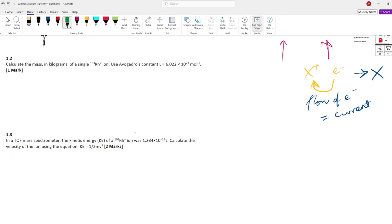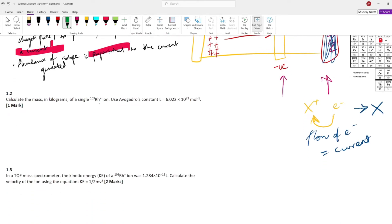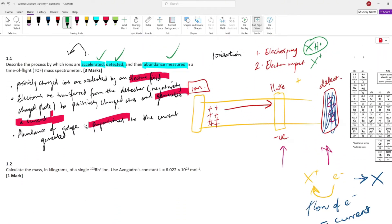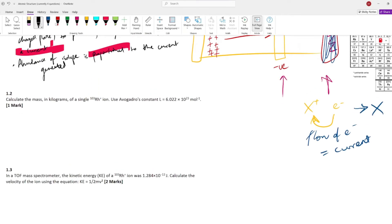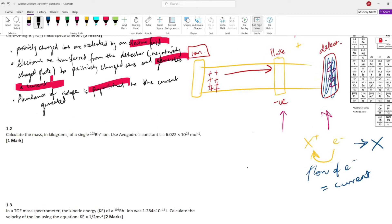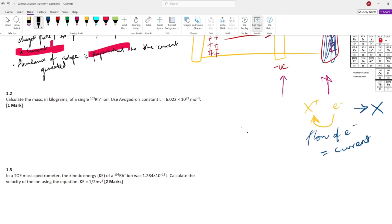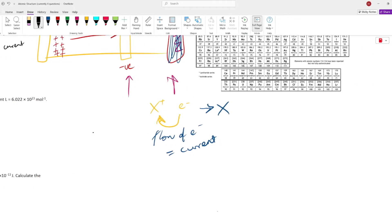Next up, we've got a little bit of calculations, and then we're going to be dealing with a TOF mass spec kinetic energy calculation. Let's look at this. Calculate the mass in kilograms of a single 103RH+ ion. We have to use Avogadro's constant. So what do we have here? Normally in these amount of substance, atomic structure, acids and bases questions, I say start with the moles. We can't do that in this situation because we don't know what the moles are.